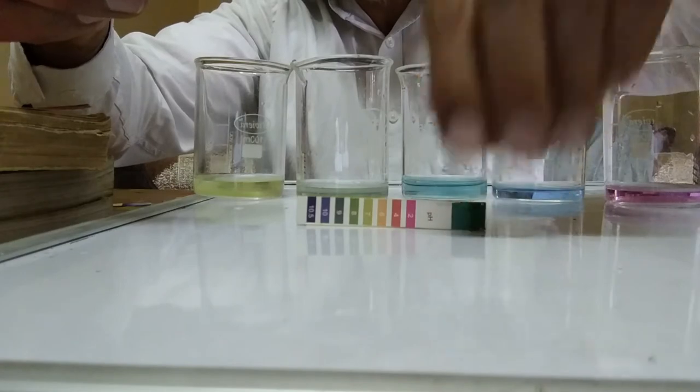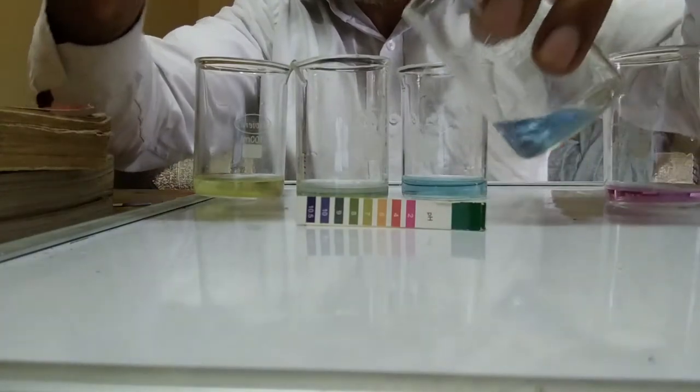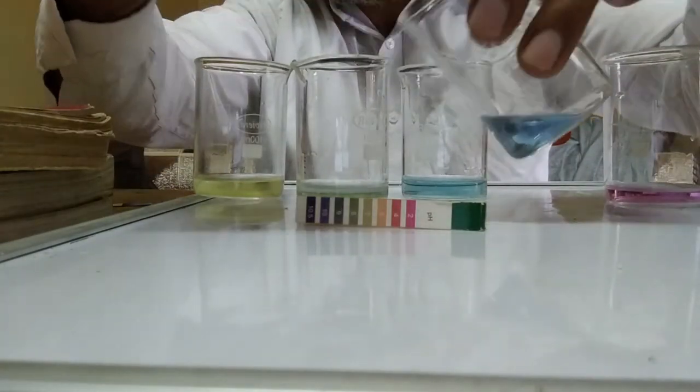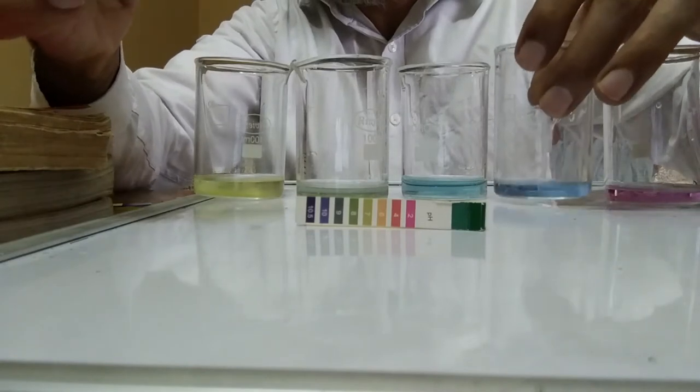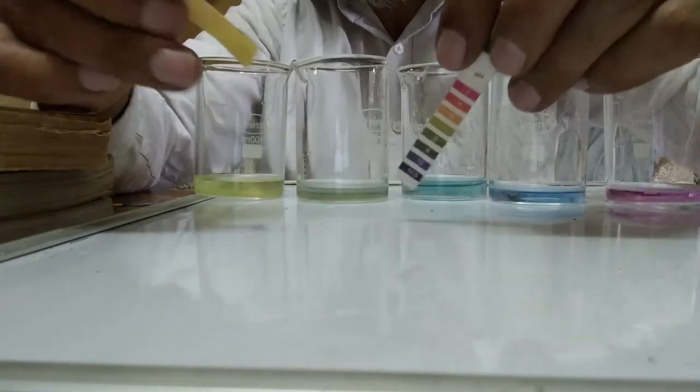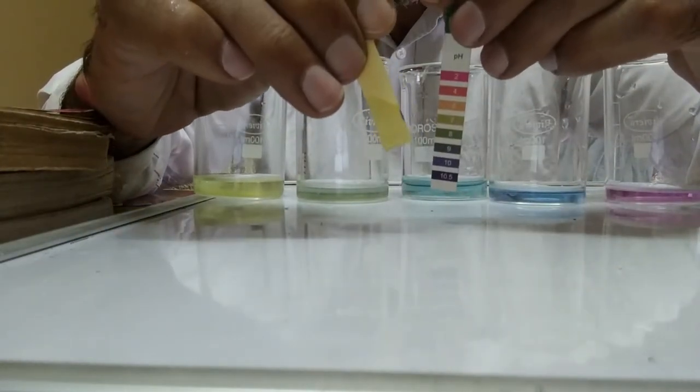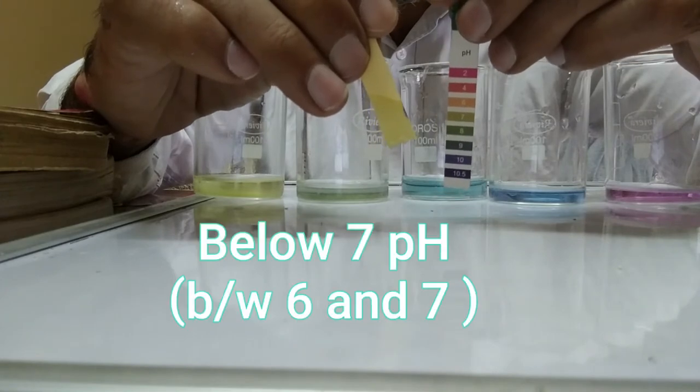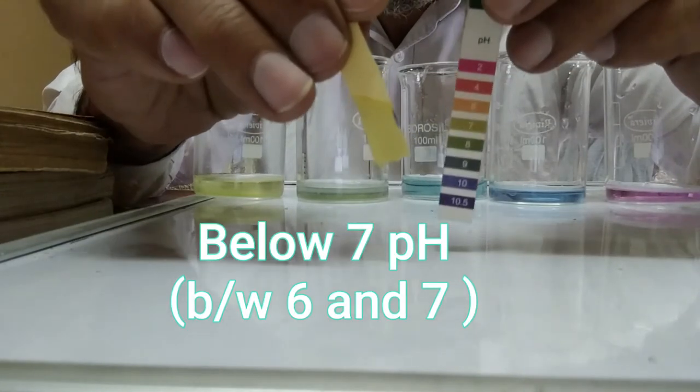Now, the second one, we will test the pH of this one. It is less acidic. Very little amount of acid was added here. It is very light green, below 7 pH, between 6 and 7. So slightly acidic it is.